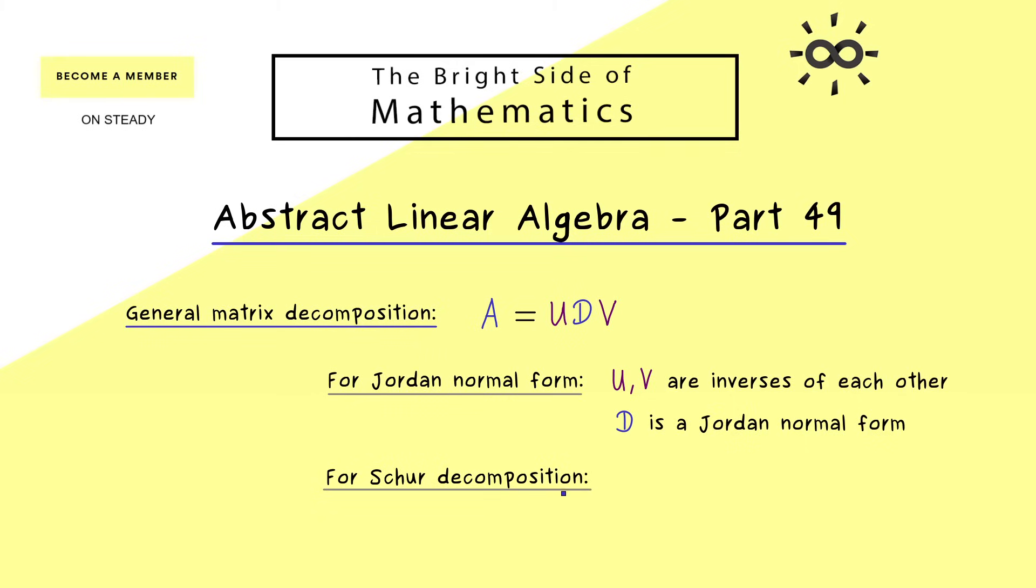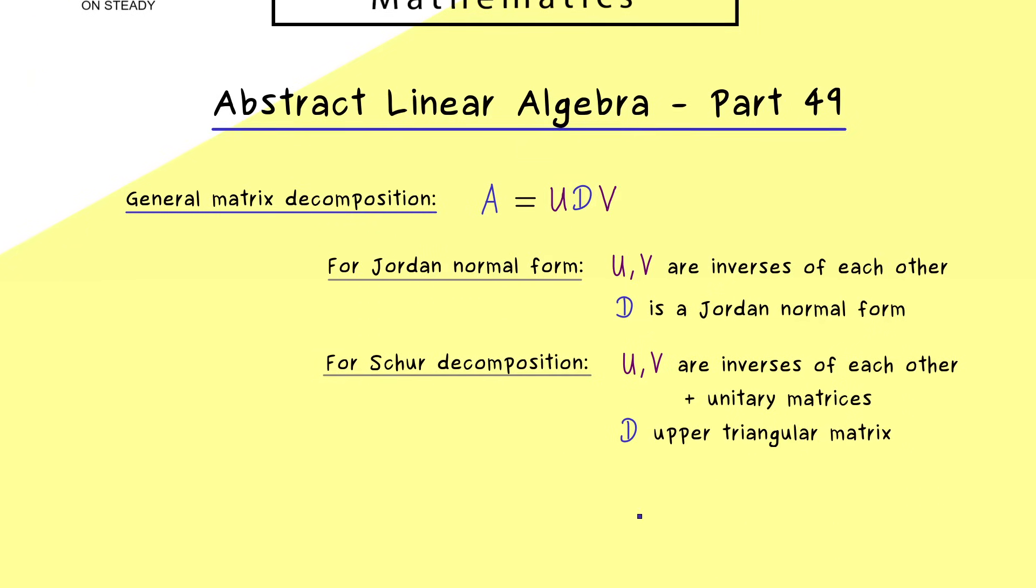This one looks similar, but we even have a stronger connection between U and V. They are still inverses of each other, but they are also unitary matrices, so the inverse is just given by the adjoint. This makes the Schur decomposition even nicer because it says that the two matrices A and D are unitarily similar. However, the price to pay for that is that D is in general far off from a diagonal matrix. In fact, we can only say that D is an upper triangular matrix.